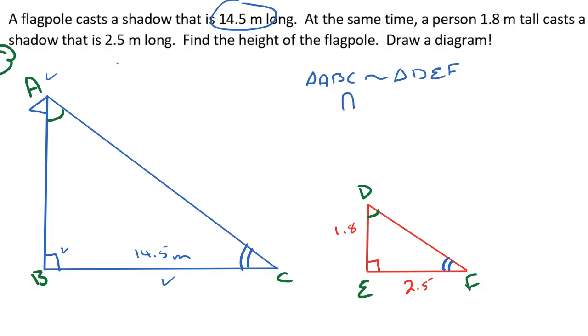So AB, which is actually the height of the flagpole, is proportional to DE. And for sides that we know, we know the shadow for both, so let's use BC is also proportional to EF. And we're going to use the information we know about these sides to solve for the height of the flagpole, which we'll mark as X.